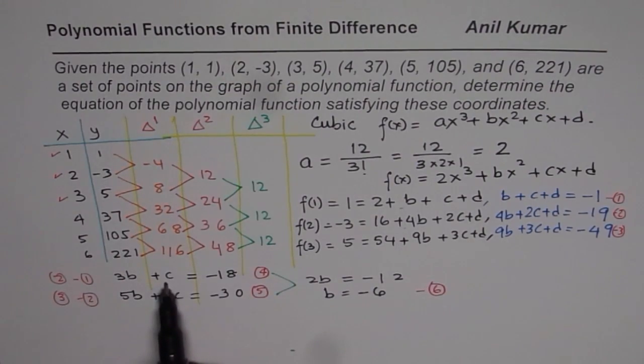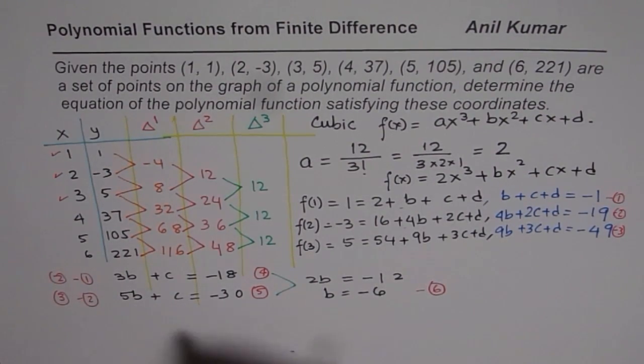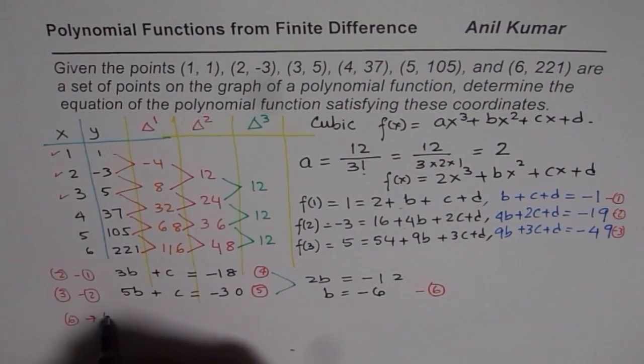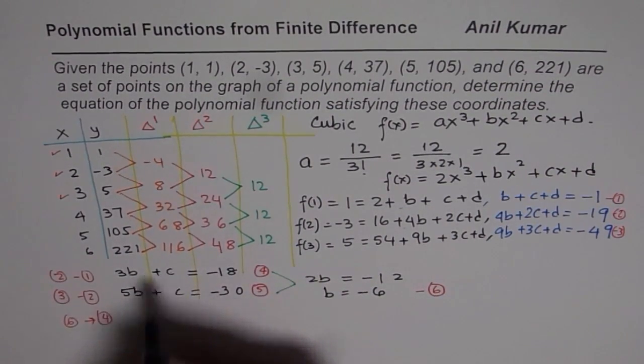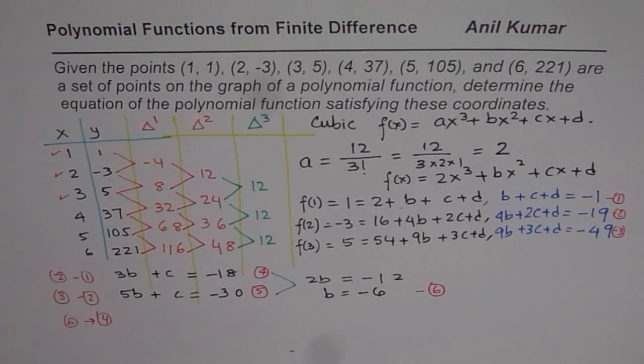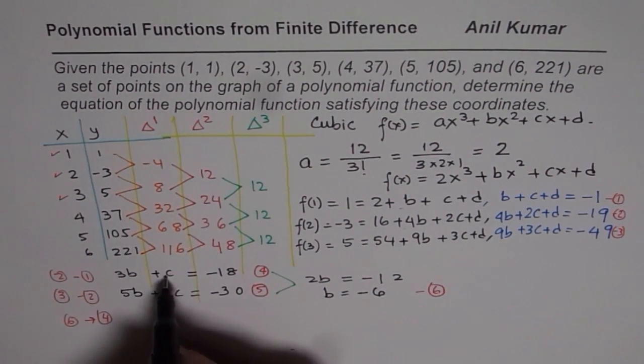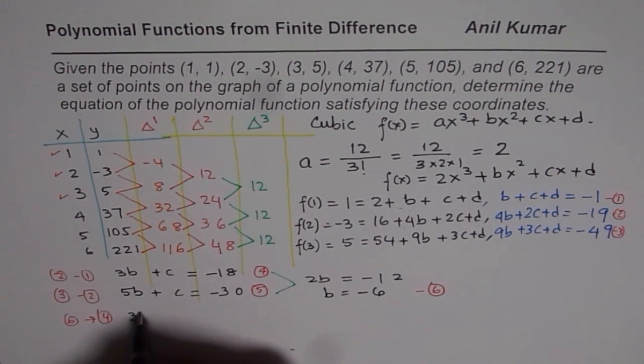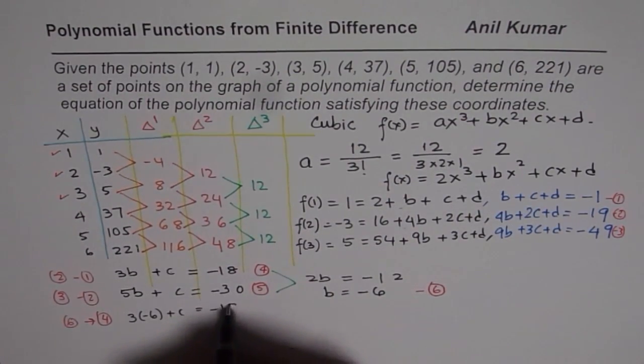Since I know b, I can substitute it back into one of my equations. So I am substituting equation 6 in equation 4 and then calculate c. So from equation 4, I am substituting -6. So I have got 3 times -6 plus c equals -18.